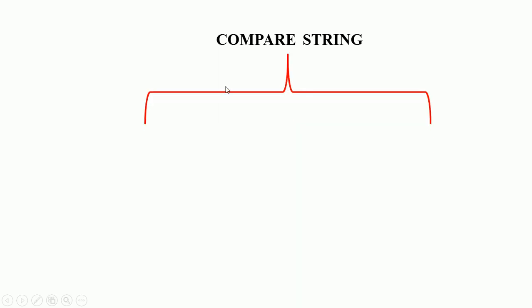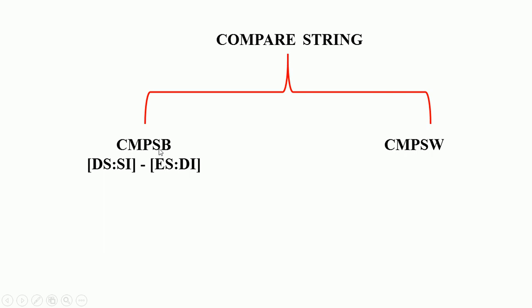First we have to discuss how compare string works. We have two compare string instructions: compare string byte and compare string word. Compare string byte compares two strings byte by byte, and compare string word compares word by word, 16 bits at a time. When executed, it gets one character or 8-bit number from the memory location pointed by DS:SI, then gets another character from the memory location pointed by ES:DI, and takes the difference. According to the difference, all flags are affected, but the content of those memory locations remains unchanged.